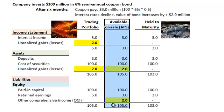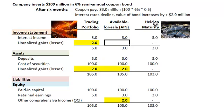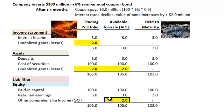Under available for sale, the $2 million price increase on the bond is not recognized on the face of the income statement, but it does grow the balance sheet — adding plus $2 million to assets and plus $2 million to other comprehensive income. Other comprehensive income is the classification under equity that by definition is the change in equity not recognized on the income statement.